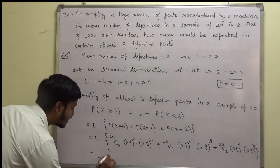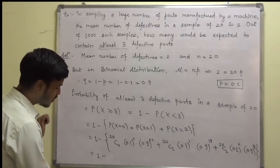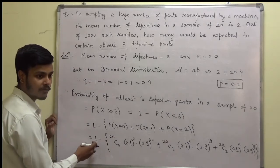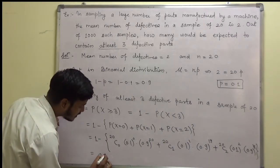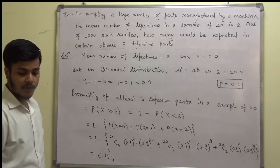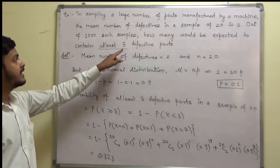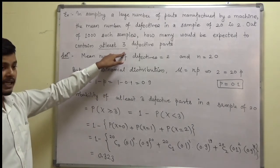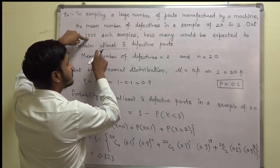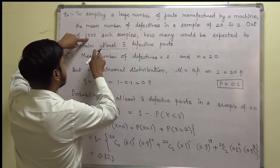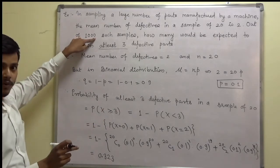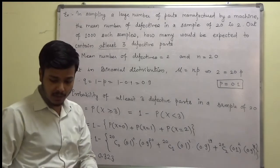When you solve this and subtract from 1, you will be getting 0.323. This is the probability of at least 3 defective pieces in a sample of 20. But we have to find out how many such samples out of 1000 contain at least 3 defective parts, so just multiply it by 1000.